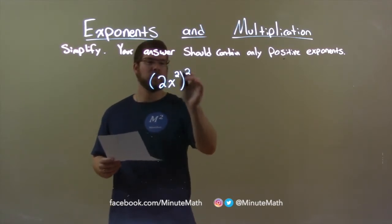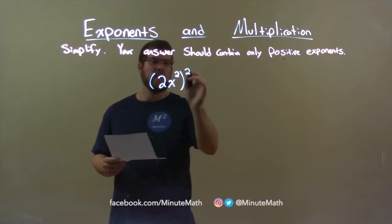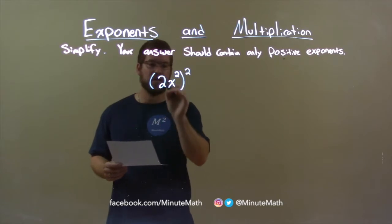What happens is, when we have something to an exponent in the parenthesis to the exponent, that exponent gets distributed to both parts inside that are being multiplied together.